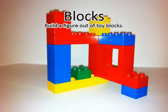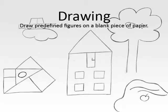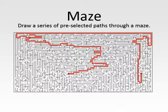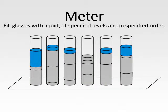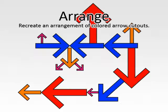The six tasks were: building a figure out of toy blocks, drawing figures on a sheet of paper, following a predefined path through a maze, filling six glasses with liquid at specified levels and in a specified order, and arranging a number of colored paper cut-out arrows and sculpting a figure out of modeling clay.